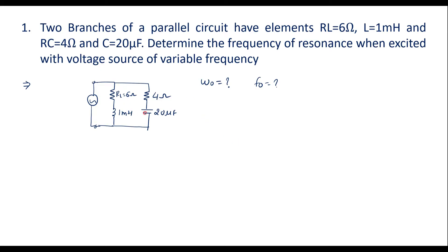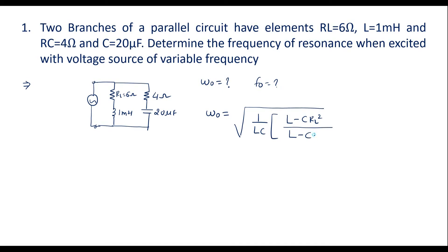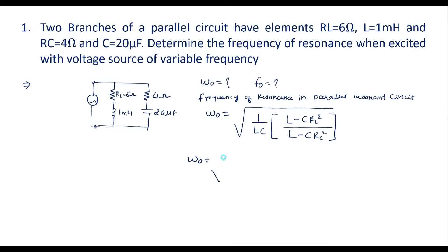We know that in parallel resonance circuits, the frequency of resonance is given by: ω₀ equals the square root of (1/LC) times (L minus C·RL²) divided by (L minus C·RC²). One should remember this formula for the frequency of resonance in a parallel resonant circuit.